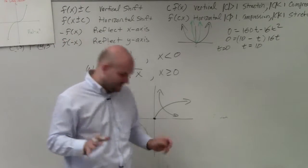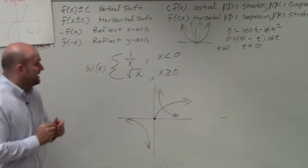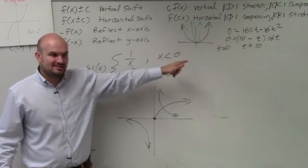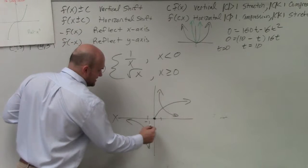However, it's not asking us, or this function is not asking us to graph for all values of x. It's saying, I only want you to graph 1 over x when the x values are less than 0. So again, we've got to remember, well, when are the x values on the x-axis less than 0?